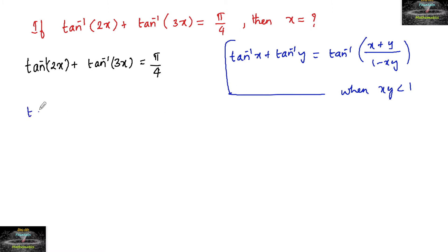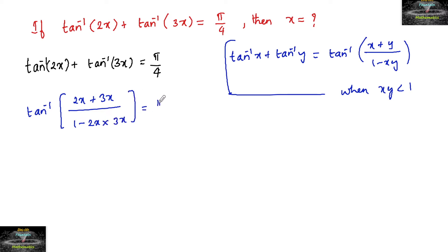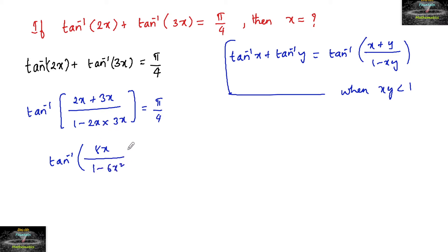So, tan inverse of 2x plus 3x upon 1 minus 2x into 3x is equal to pi by 4. That simplifies to tan inverse of 5x upon 1 minus 6x squared is equal to pi by 4.